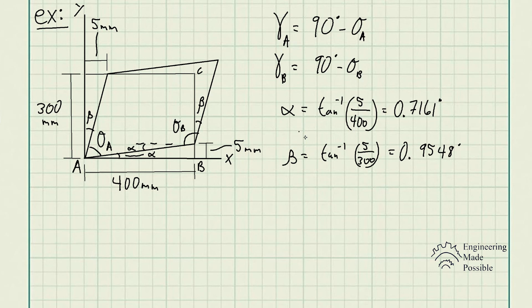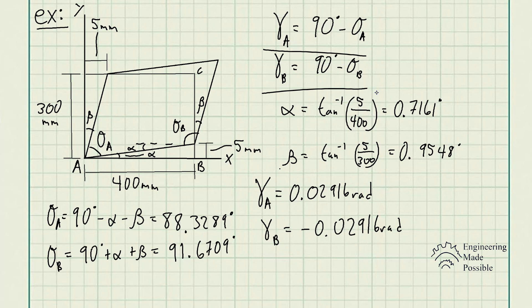With alpha and beta, we can determine theta A and theta B. Theta A equals 90 degrees minus alpha minus beta, giving 88.3289 degrees. Theta B equals 90 degrees plus alpha plus beta, giving 91.6709 degrees since the angle increased. The shear strain at A is positive 0.02916 radians and the shear strain at B is negative 0.02916 radians. Always convert degrees to radians for shear strain.